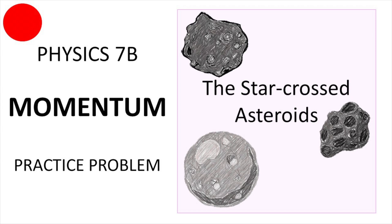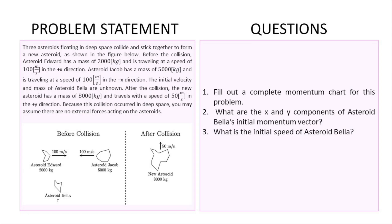Hello everybody, welcome back to our channel. In this episode we're going to be solving a Physics 7B momentum practice problem called 'The Star Crossed Asteroids.' As usual, if you're finding this content helpful, leave a like and subscribe — it helps the channel a lot. Let's go ahead and get started. Feel free to pause the video to copy the problem in your notes, as this is a long one.